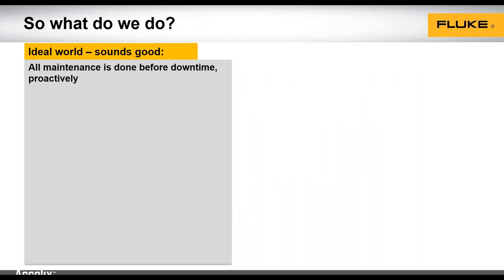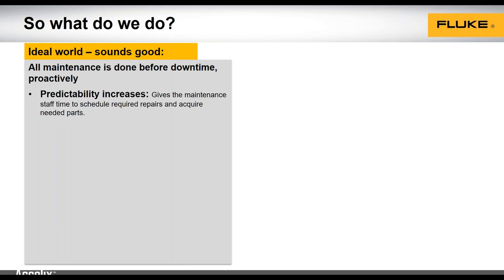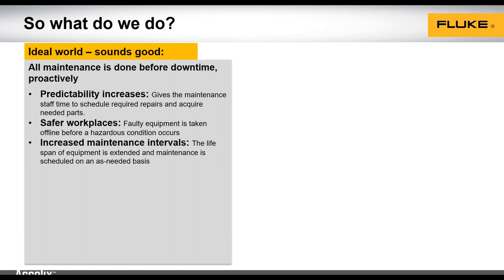So what do we do? Let's talk about some ideas — none of these are brand new. First, we all know we want to be more proactive. Proactive maintenance allows us to schedule repairs and acquire parts. Machines aren't blowing up — it's safer, and we're not doing emergency work orders. Increased maintenance intervals mean machines last longer, costs go down, and production goes up. Fewer problems are happening that we don't know about, we can plan our repairs, and this makes our peace of mind better.